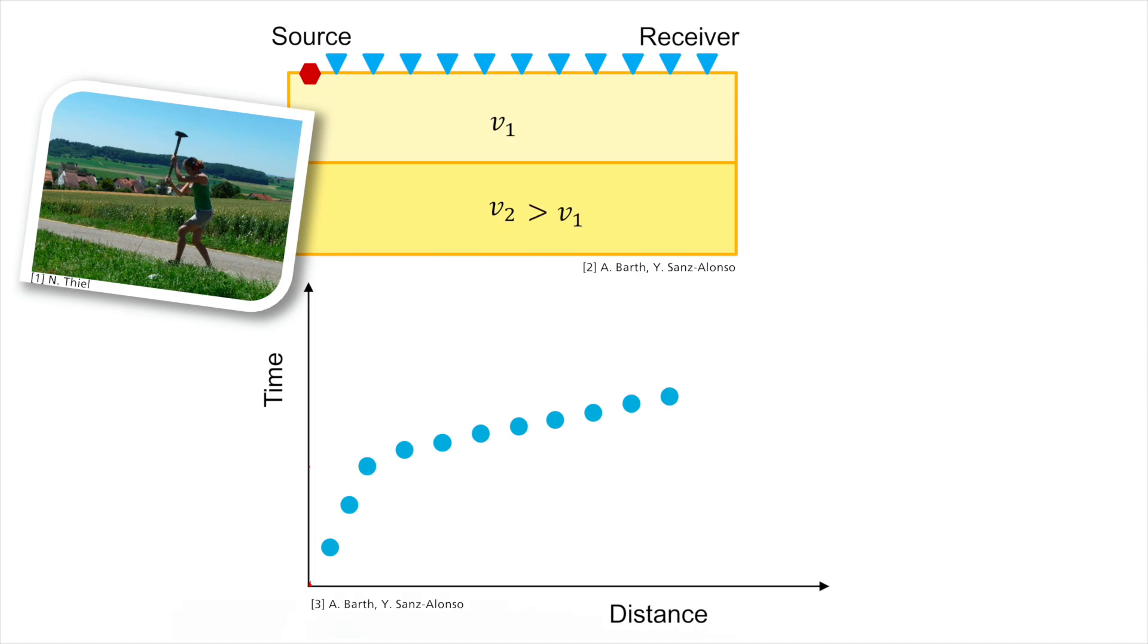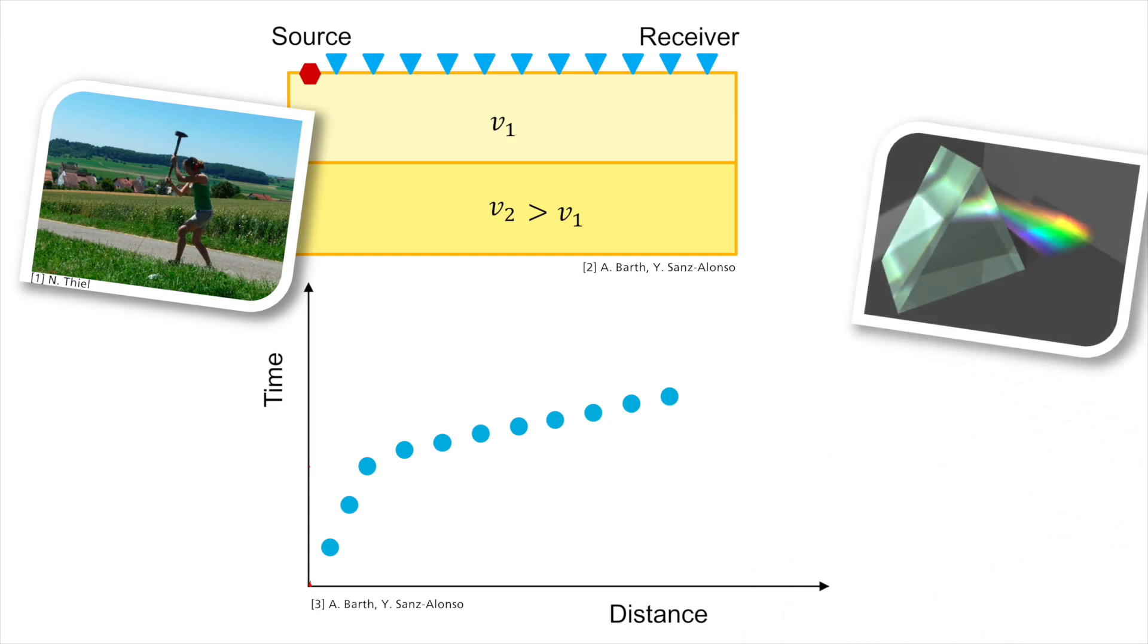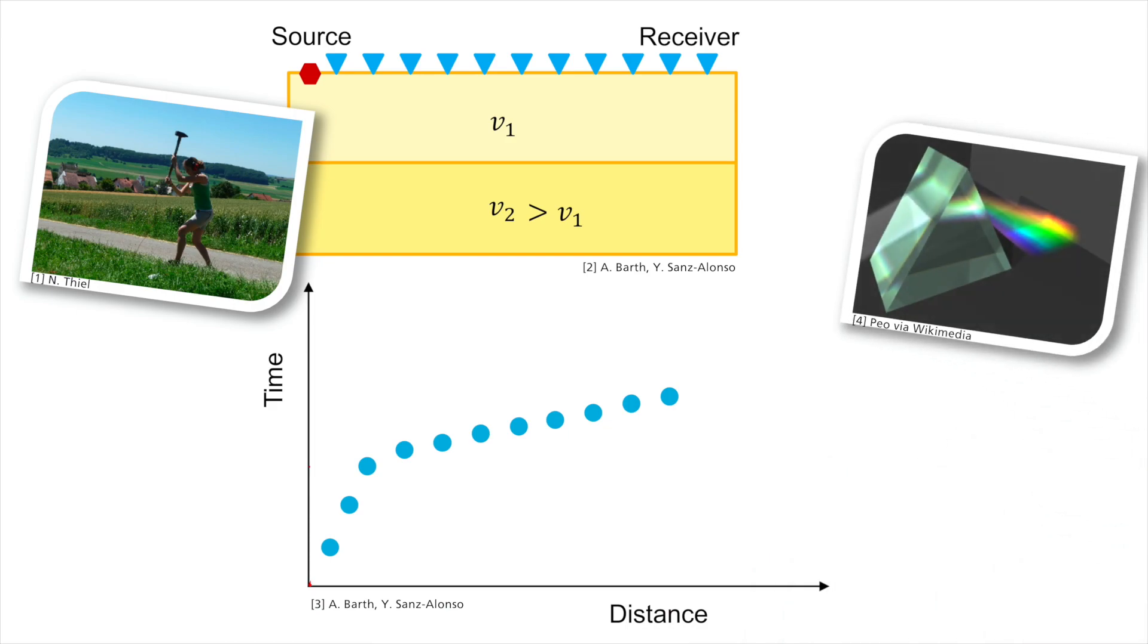The description of the travel path is analogous to optical waves, as Snell's law also applies to seismic waves. For reflected waves, the angle of incidence equals the angle of reflection. For refracted waves, the following applies: sine alpha1 divided by v1 equals sine alpha2 divided by v2.